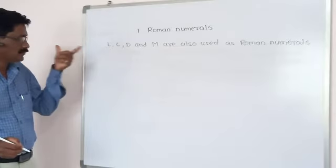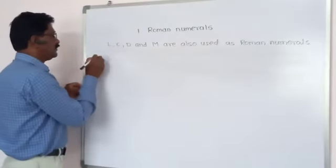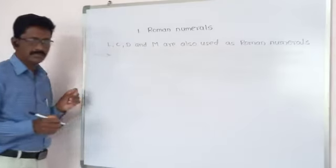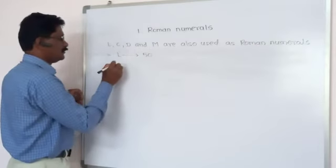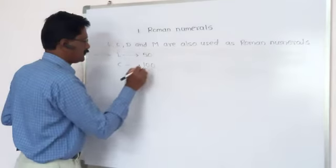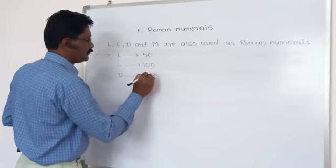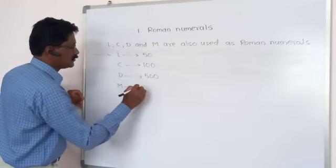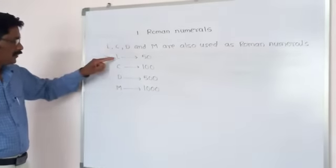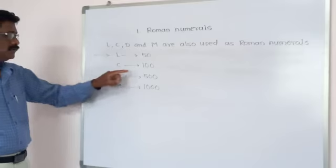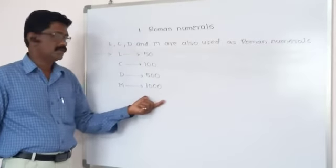These four capital letters are also used in Roman numerals and they represent international numbers. L represents 50, C represents 100, D represents 500, and M represents 1000.